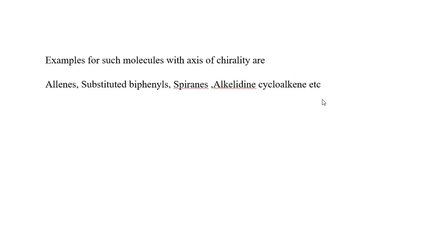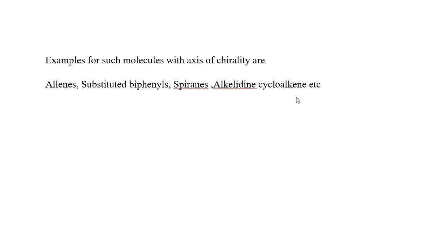Examples of molecules with an axis of chirality are allenes substituted by phenyls, spiro compounds, alkylidene cyclohexene, alkylidene cycloalkenes, etc.